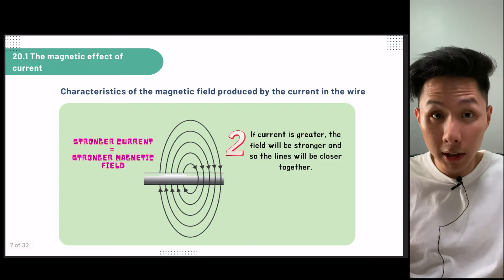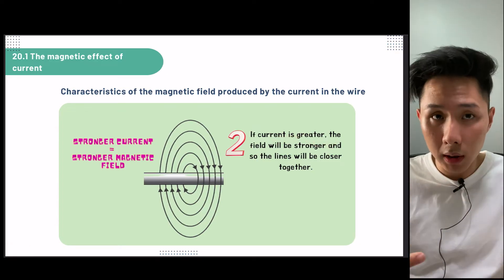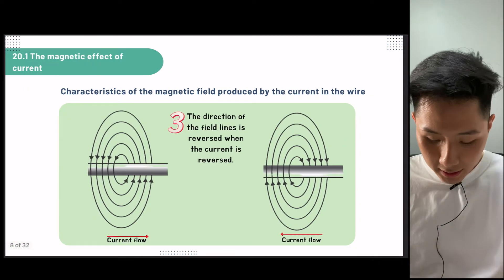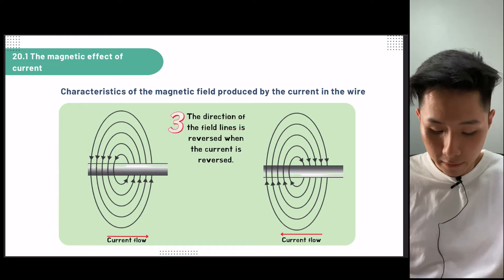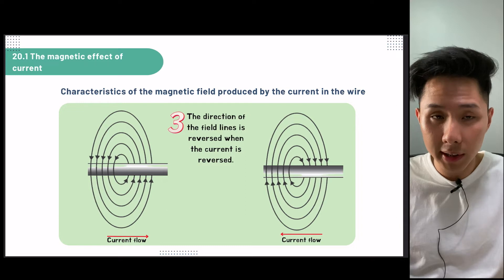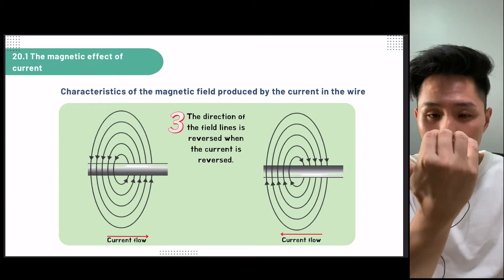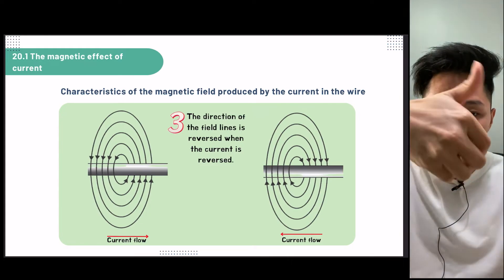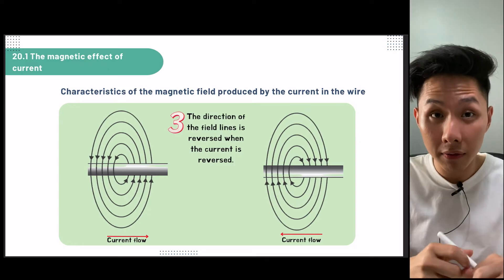The second characteristic is that if the current is greater, the field will be stronger. So if you want a stronger magnetic field around the wire, you just have to increase the current. The third characteristic is that the direction of the field line will be reversed when the current is reversed. So if you point your thumb towards the right compared to the left, you are going to get two different directions of the magnetic field.